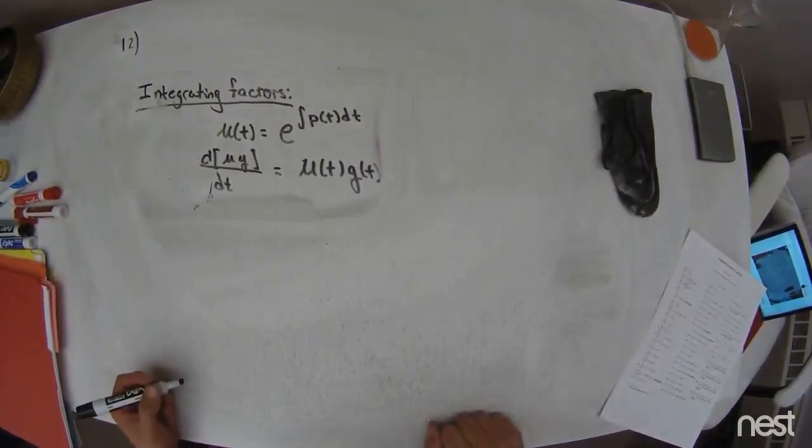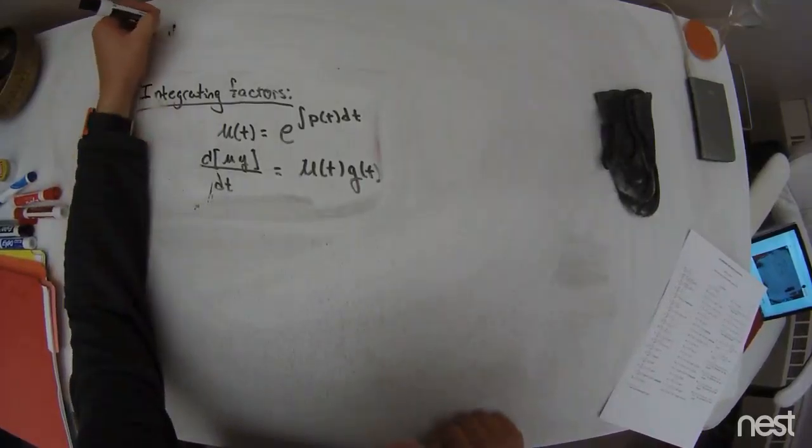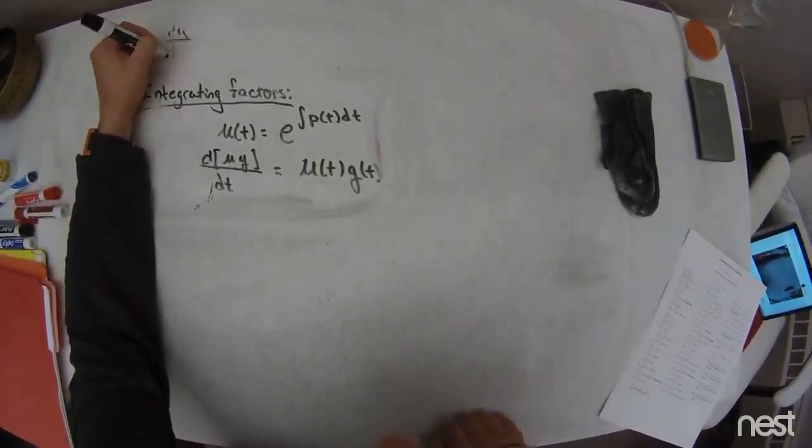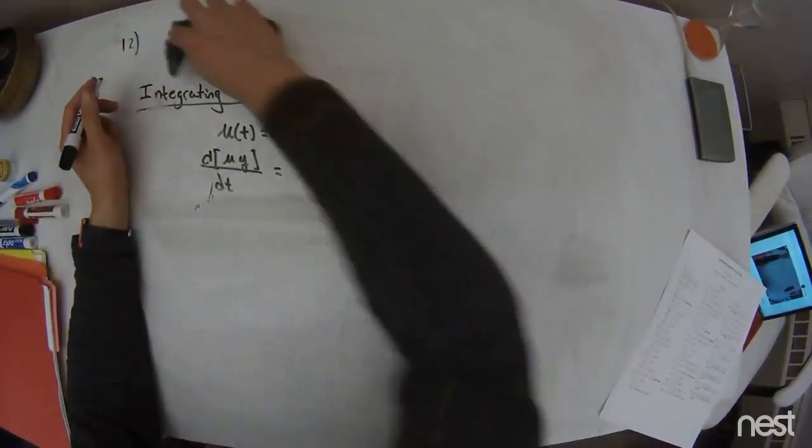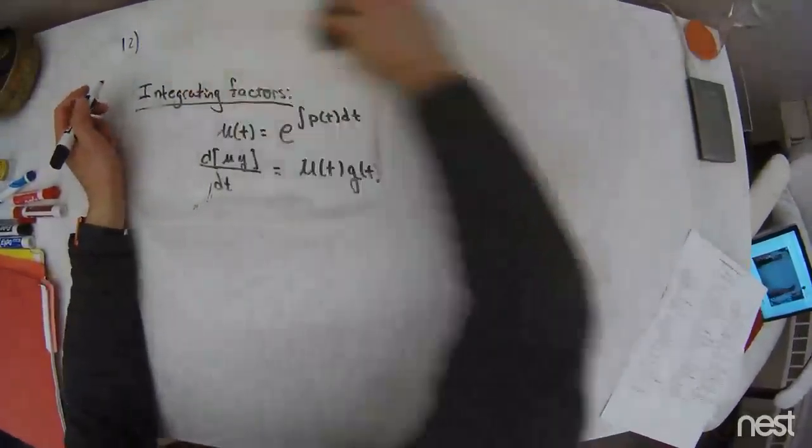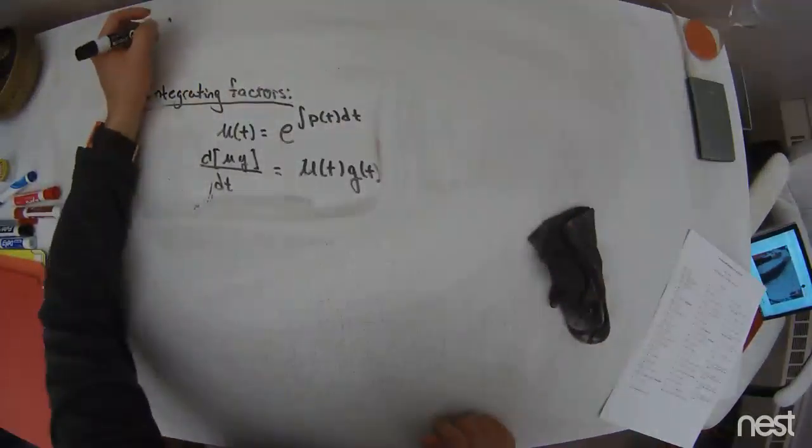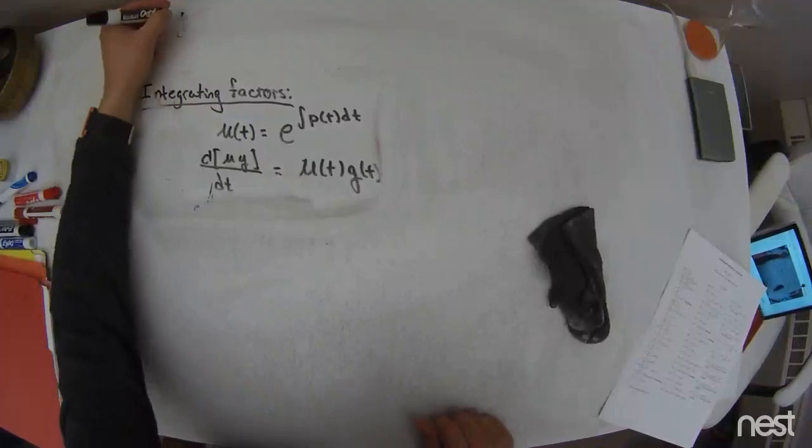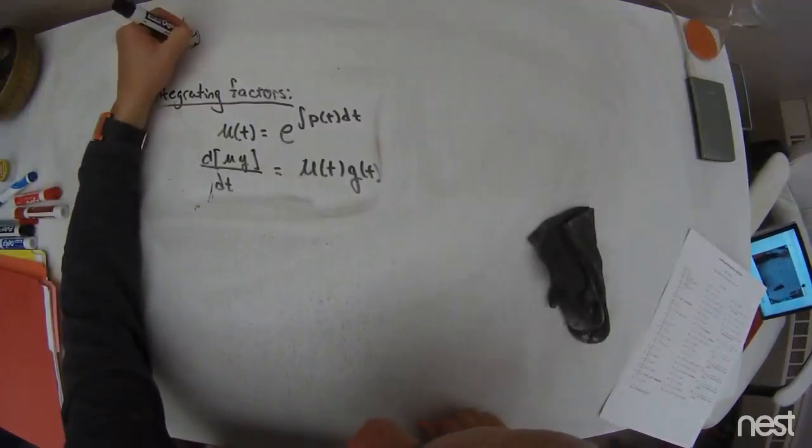Okay, number 12, try two. There might be something for the blooper reel after all this is done. Because I did it wrong. I mixed together two problems, and there was an integral that came out that was just horrible, right? And I stopped.